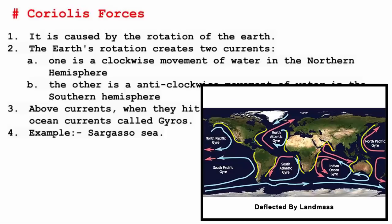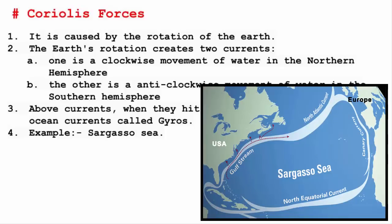When these currents are deflected by land masses, they create huge ocean currents called gyres. One good example is the circular current in the Sargasso Sea. The Sargasso is the only sea to be surrounded not by land, but by four ocean currents.